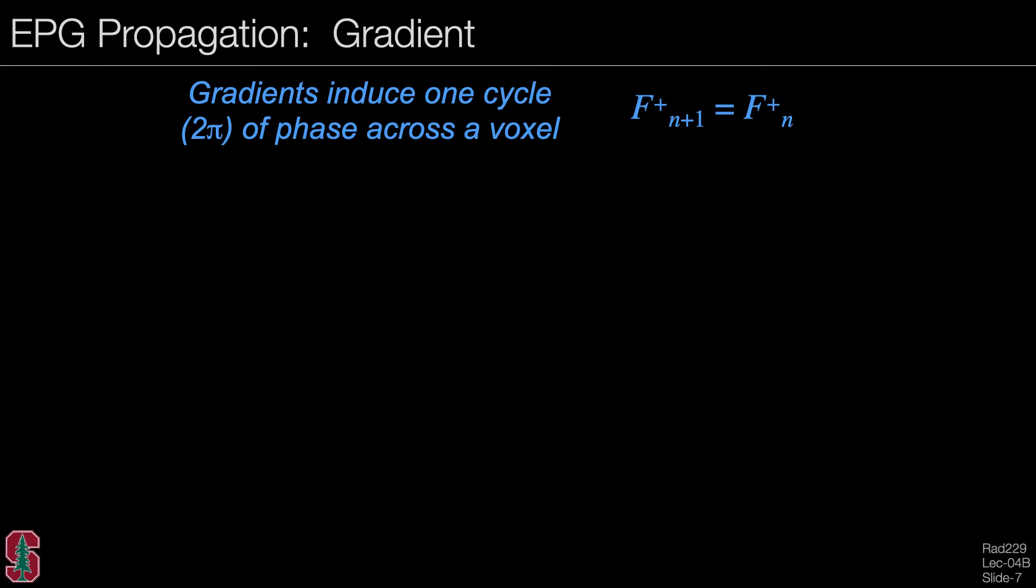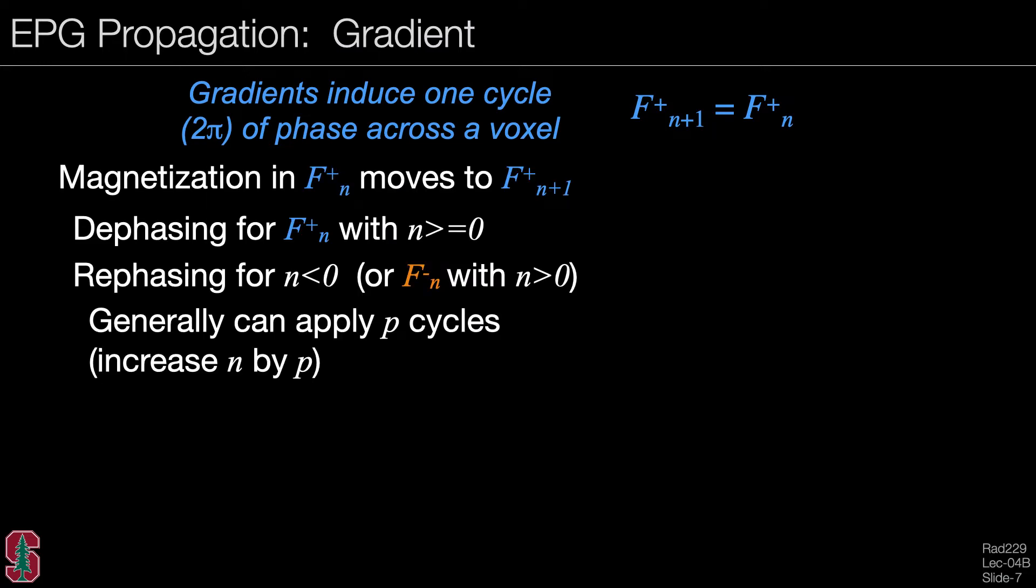Let's now look at gradients. A unit gradient induces one cycle or 2π of phase across a voxel. The simple transformation here is that F plus sub n+1 is just equal to F plus sub n. So basically we're increasing the order of our states, that is, we're applying a twist. So magnetization in the F plus n state moves to the F plus n+1 state. This is dephasing for F plus sub n, for n greater than 0, but it's actually rephasing for the F minus n states, where n is greater than 0. And in general, you can apply p cycles. So you can actually increase the subscript or order by p.